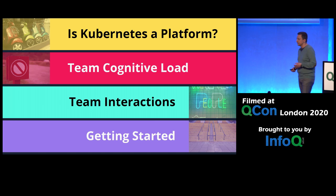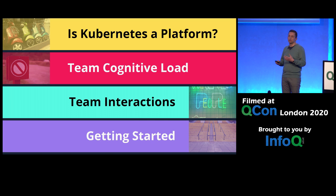Today I'm going to talk about: is Kubernetes really a platform? What is team cognitive load, and what does that have to do with platforms? What are some team interaction patterns we can apply? And then some ideas on how to get started if you want to have this kind of team-centric approach to Kubernetes adoption.